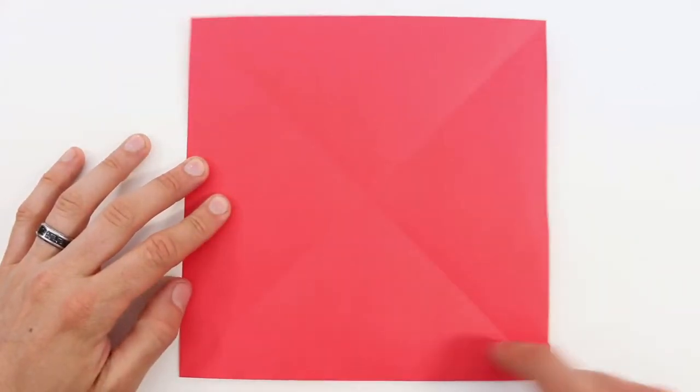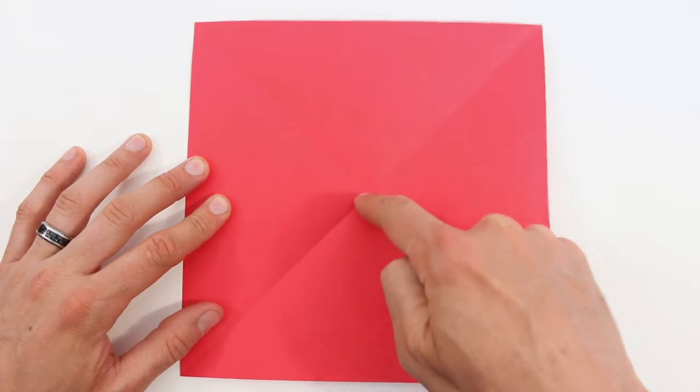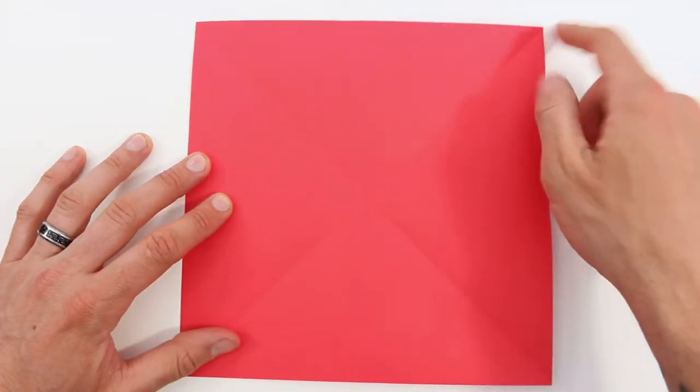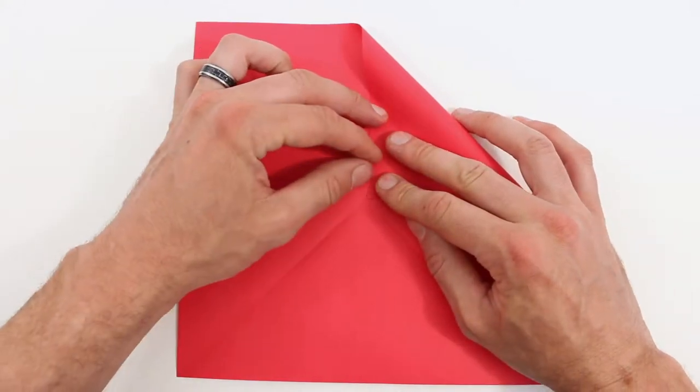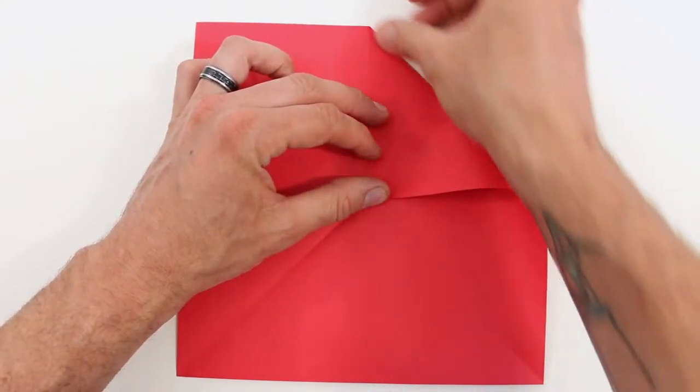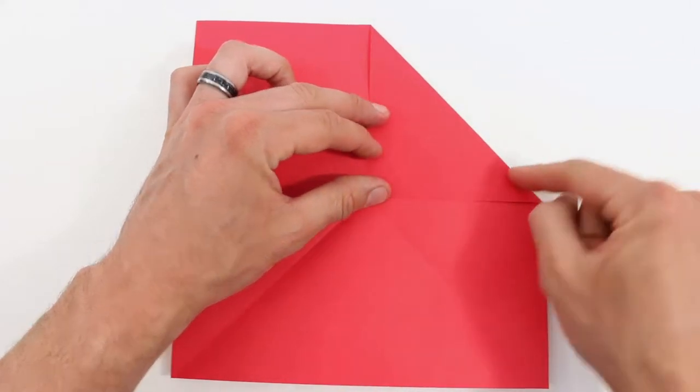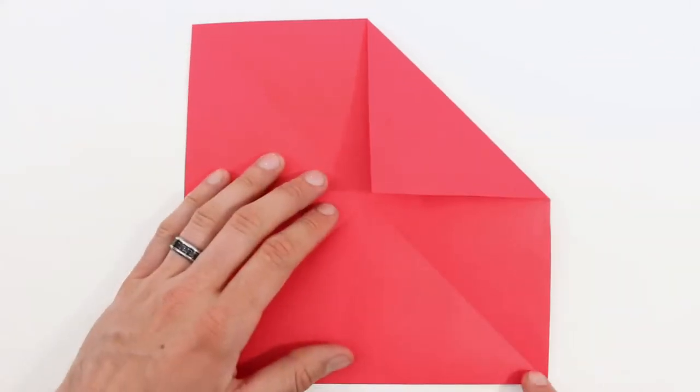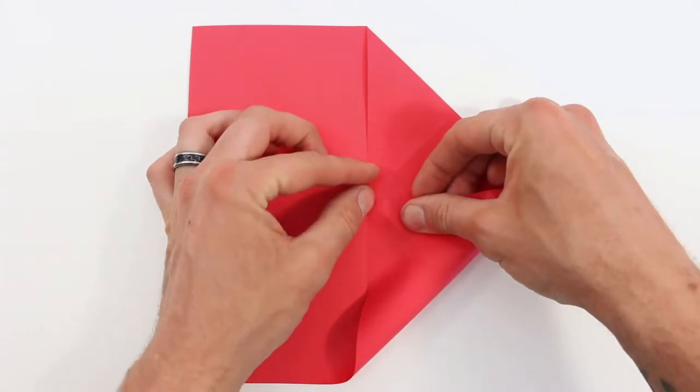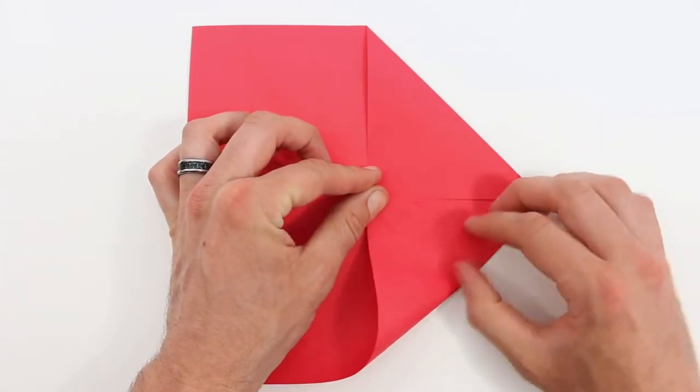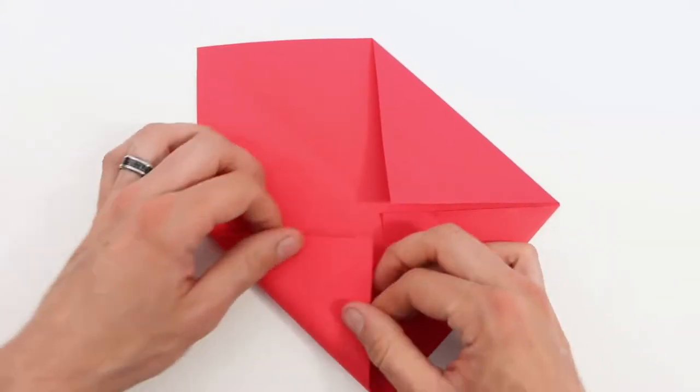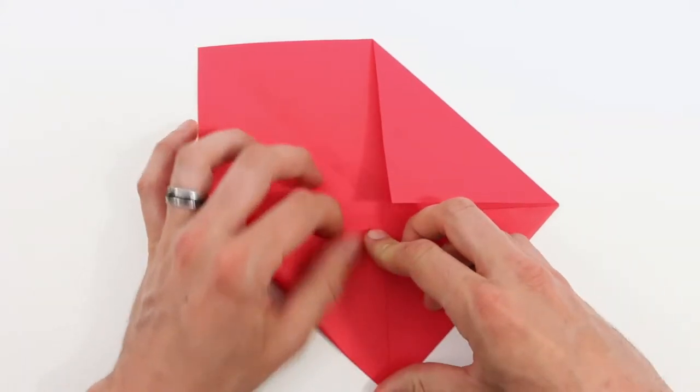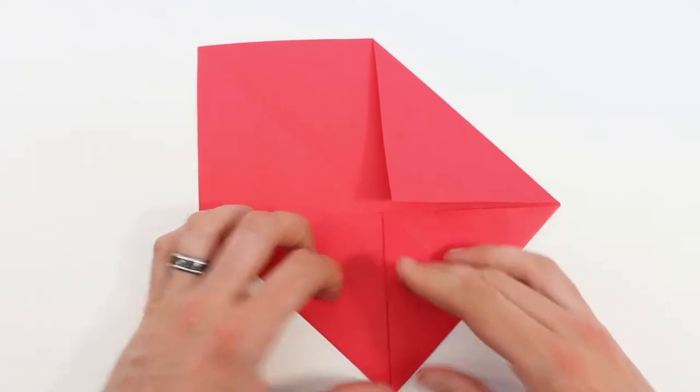Next we're going to make a blintz fold. So to do that we'll bring each of these four corners in to lie along the center of this X here. So we'll start with this top right corner, bring it down right to the center of that X and then crease it and do the same thing with the bottom right, now the bottom left, and the top left.